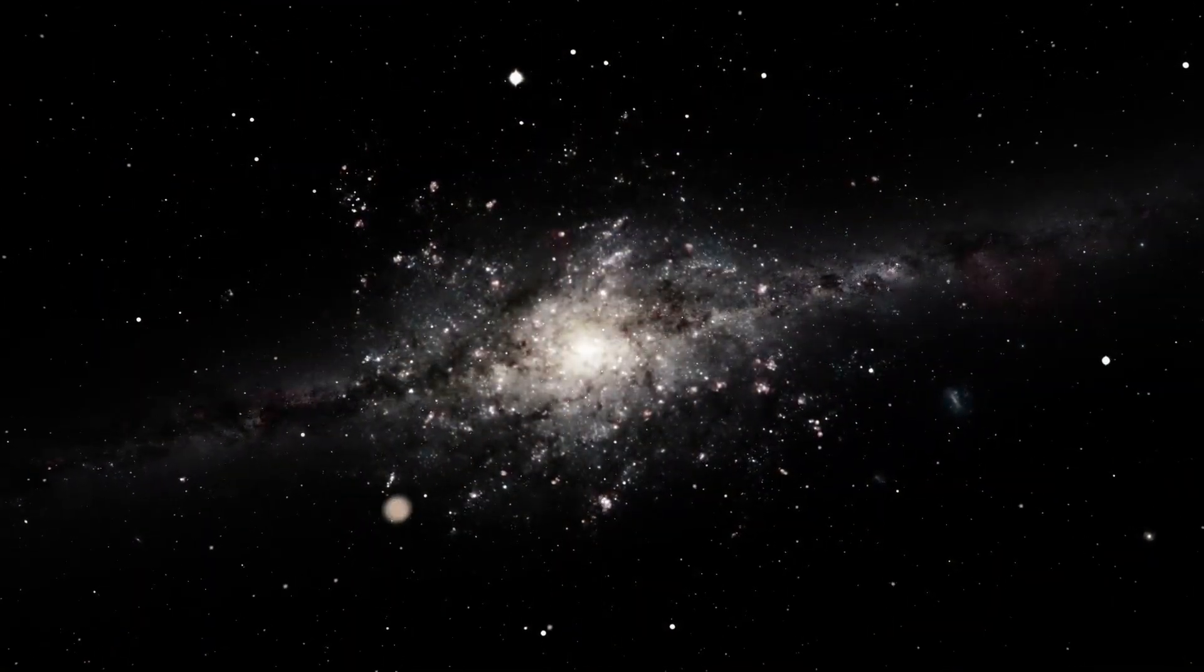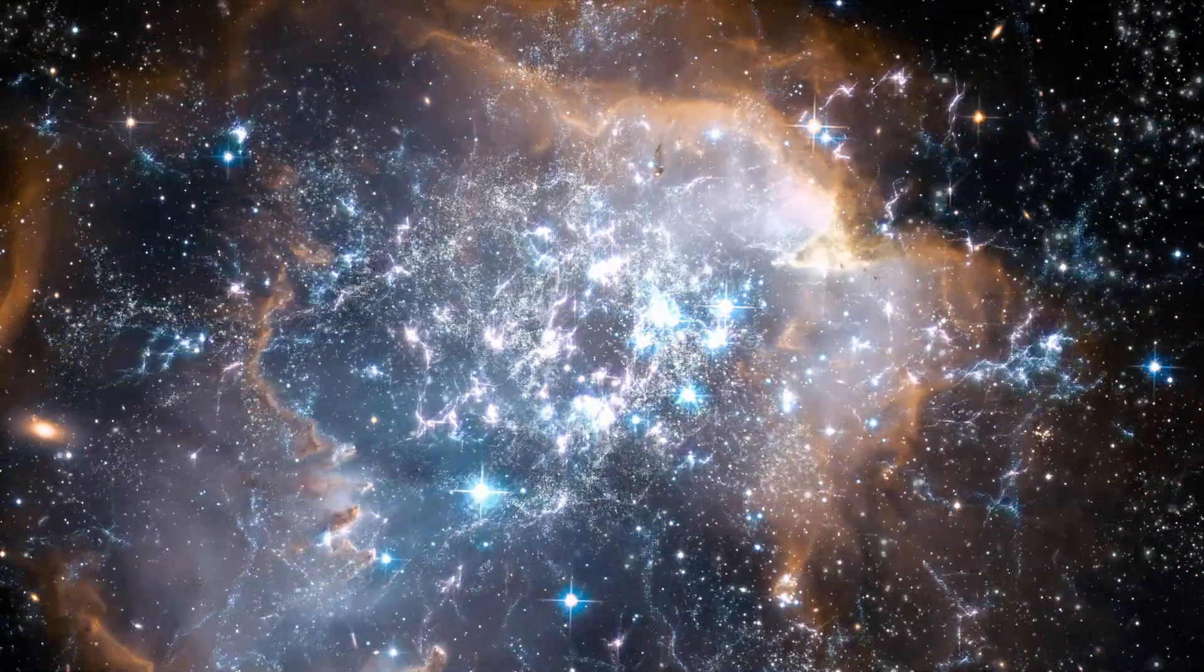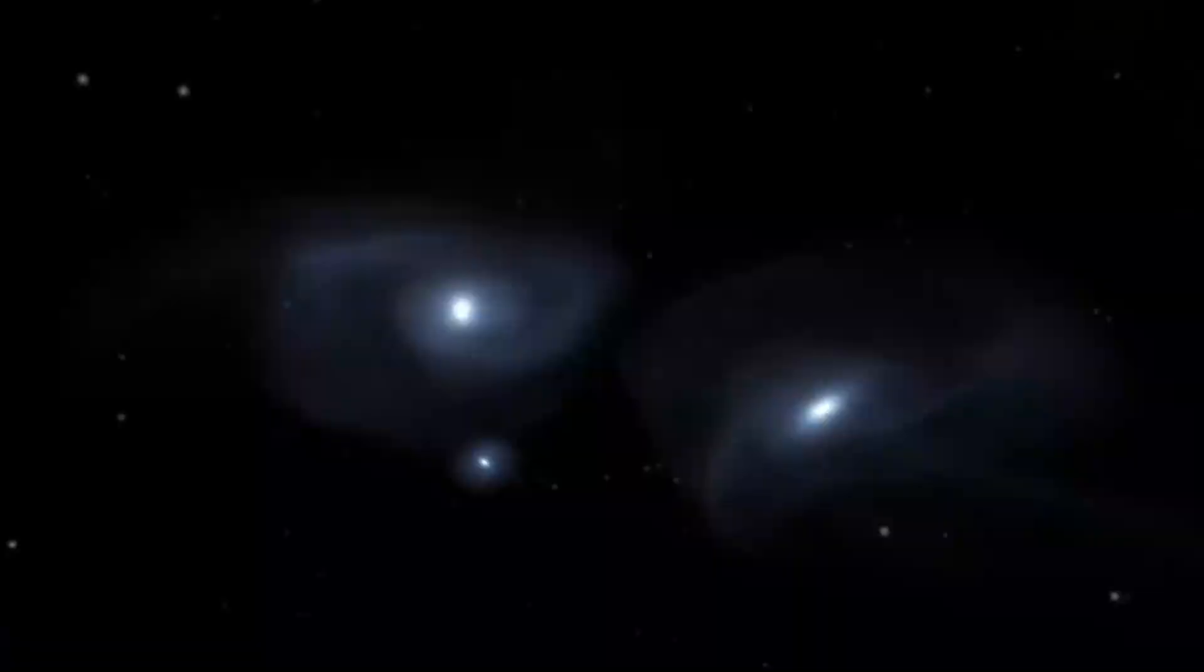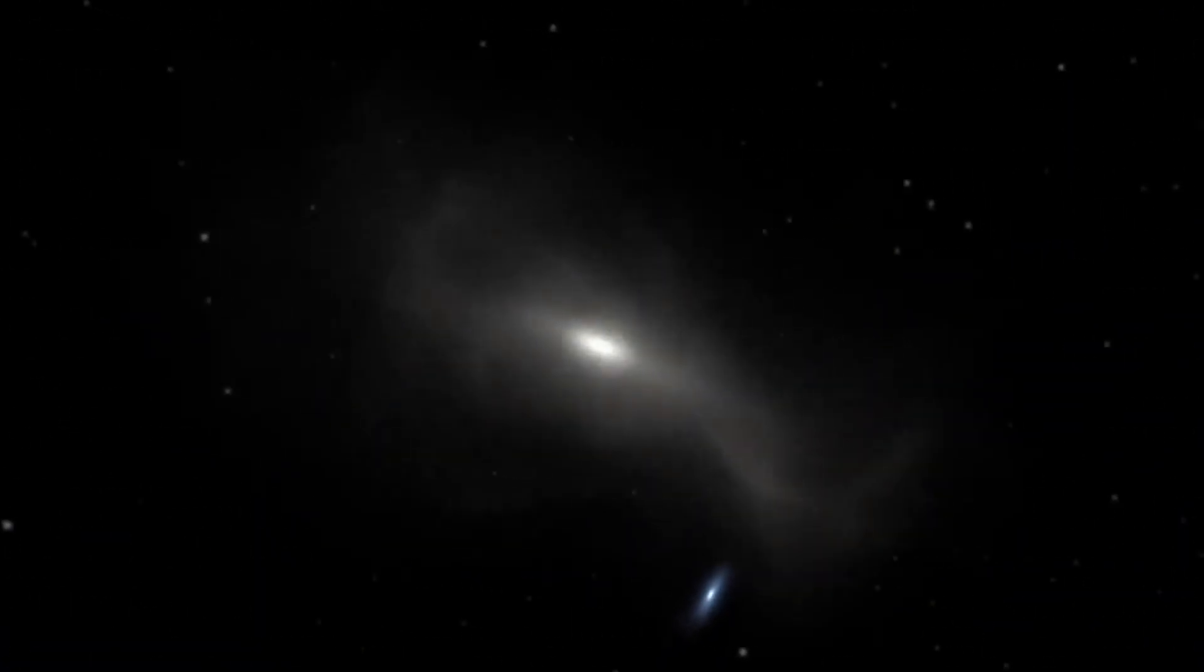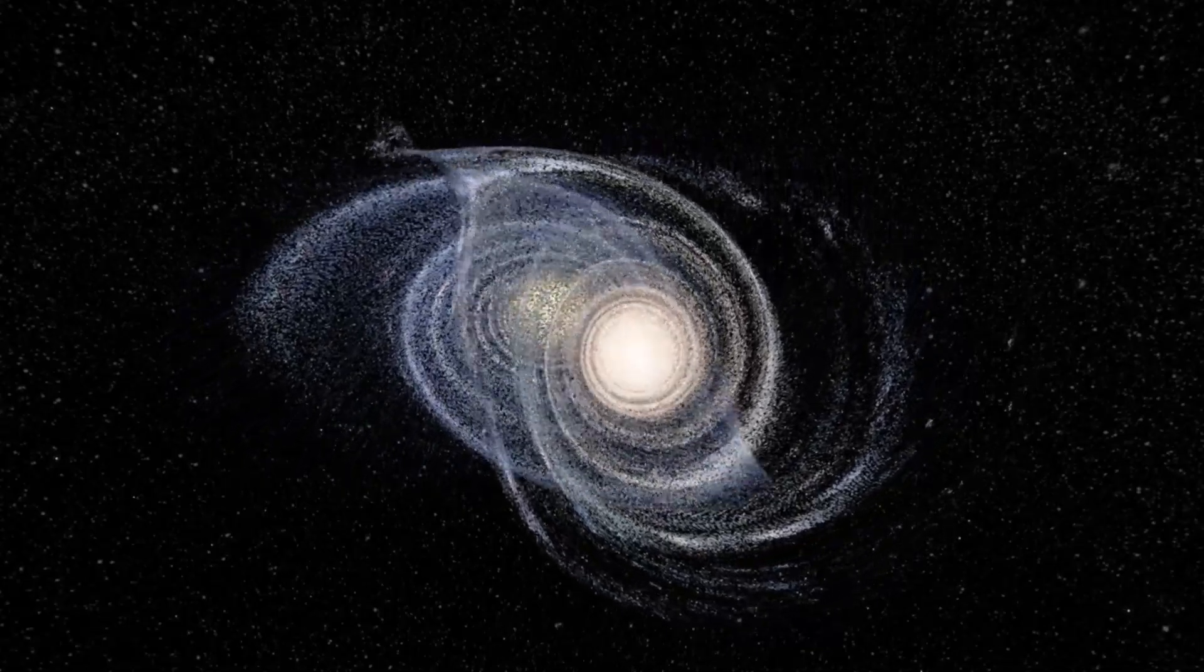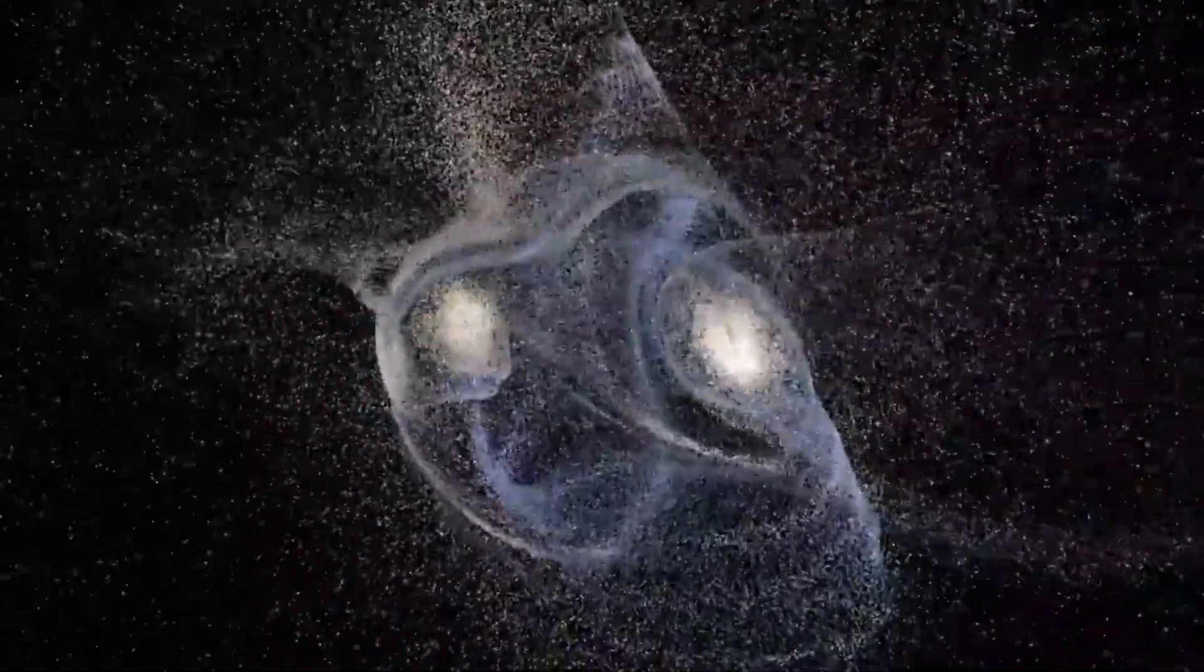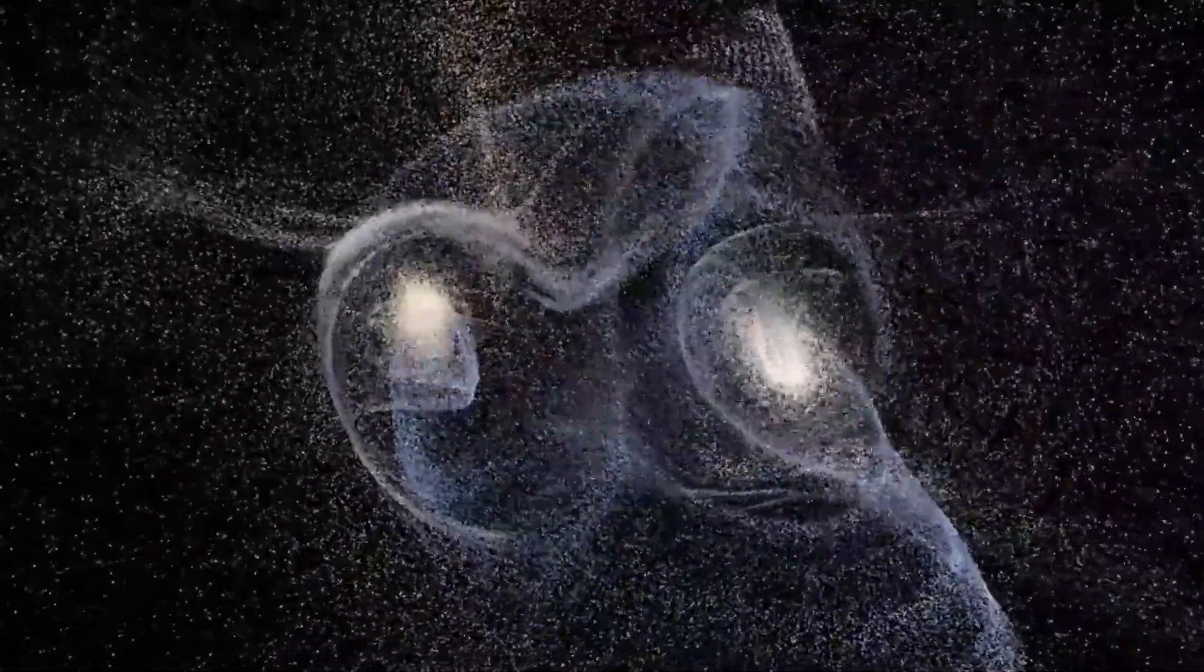As the galaxies approach the Great Attractor, they may encounter other galaxies or galaxy clusters and undergo violent interactions which could change their shapes, sizes, and properties. These interactions could trigger star formation, gas stripping, morphological changes, and other phenomena that affect the evolution of the galaxies.